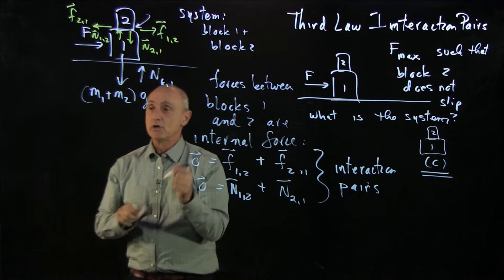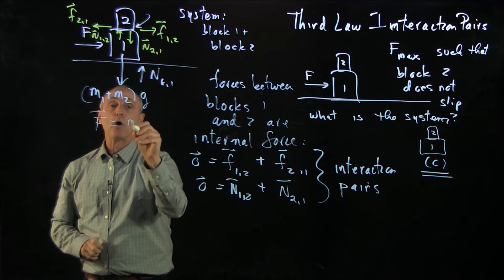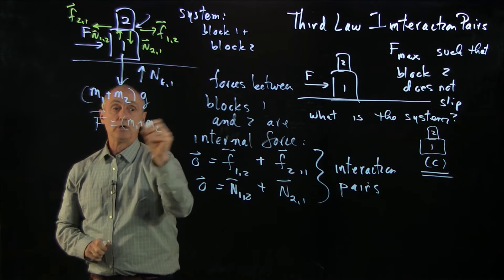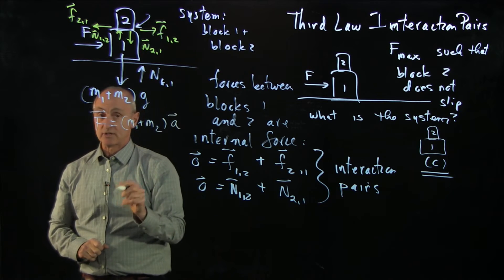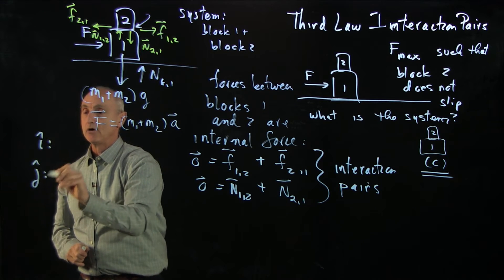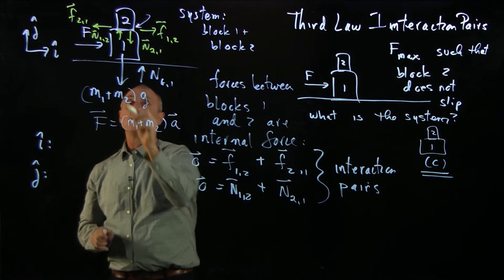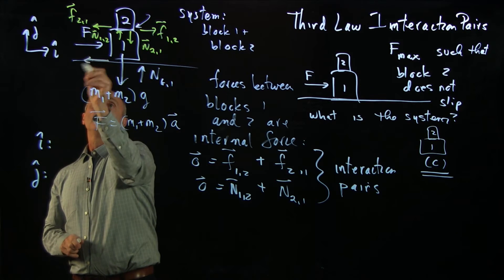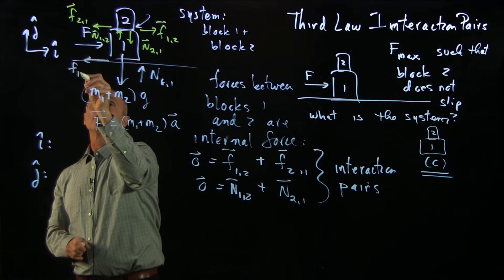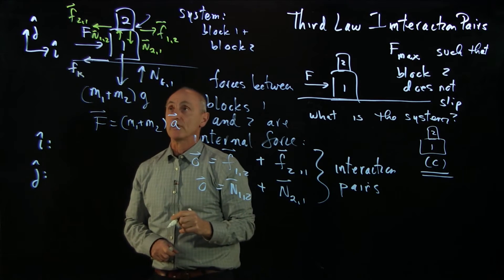And again, this enables us now to just draw F equals M1 plus M2 times the acceleration of the system. And so we have our i-hat and our j-hat directions. Let's pick i-hat and j-hat. And now we didn't include the kinetic friction force of the ground in that system. So let's make sure that that's there.